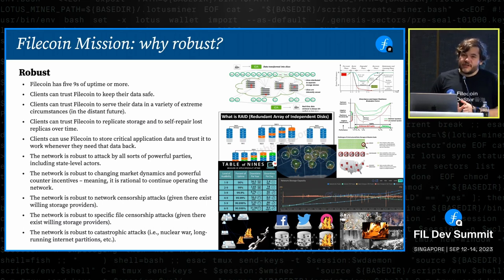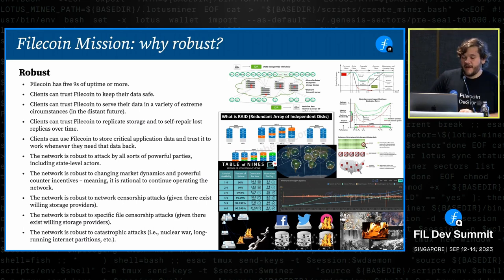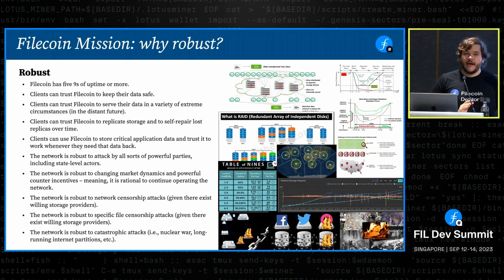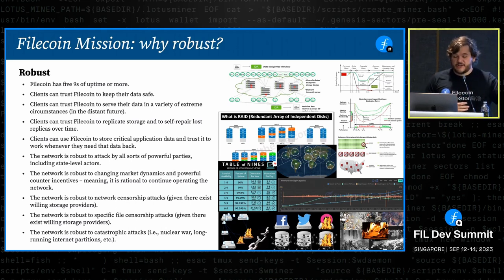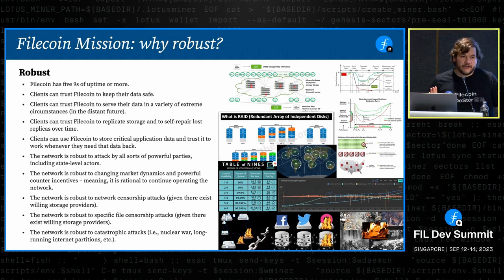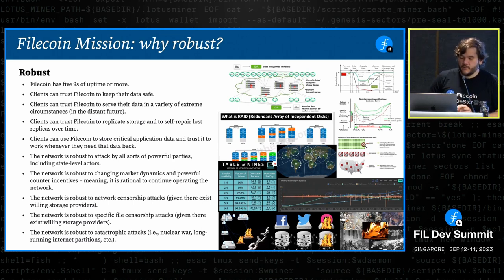One thing that would be great to achieve — and this is very hard — is to resist massive mass-scale disasters. The early internet was designed to survive things like nuclear war or catastrophic seismic events or long-running internet partitions. It would be amazing if Filecoin could survive that kind of thing. Right now I don't think any blockchain is able to do that today, but maybe in the future we'll be able to get there.